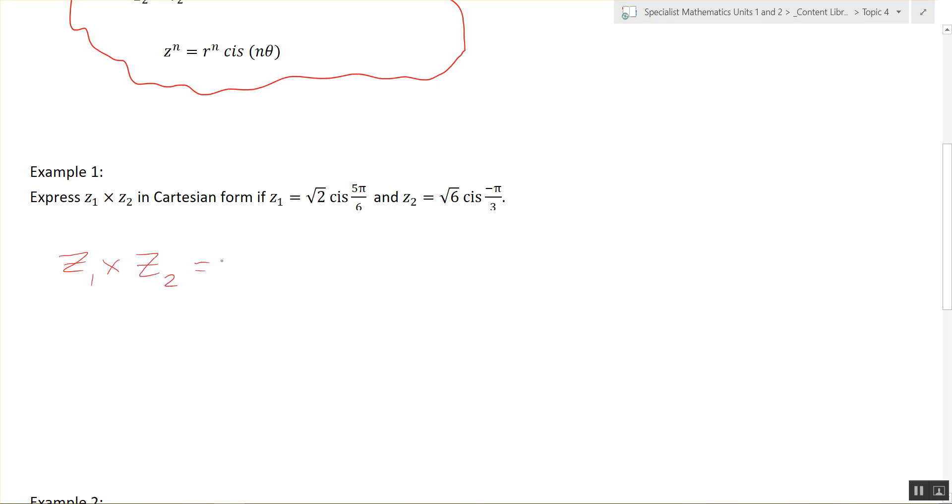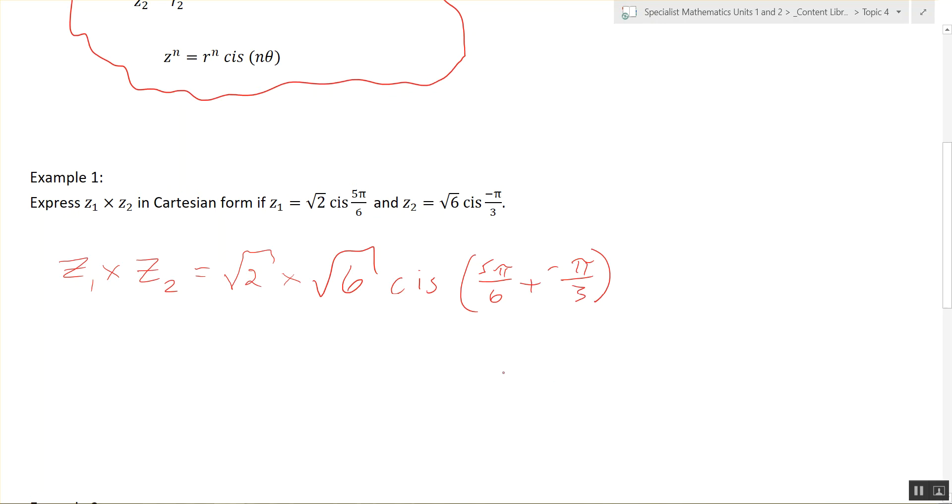What do we do? So the modulus, we're adding a negative, which is the same as minusing a positive. Third rules, square root of two times square root of six. Square root of twelve.